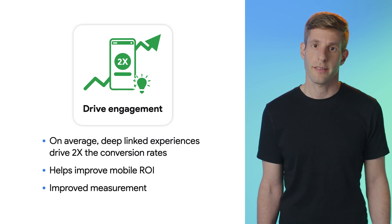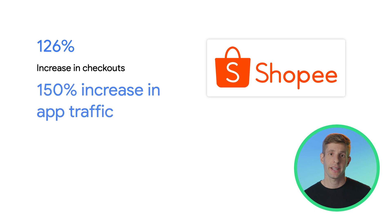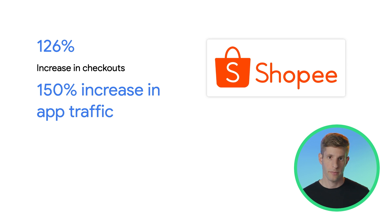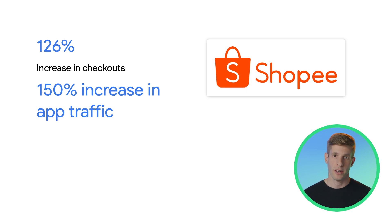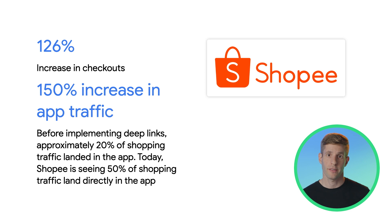Now let's talk about some companies that started using deep links and the tremendous effect it has had on their business. Shopee, the leading e-commerce platform in Southeast Asia and Taiwan, realized that their app traffic converted 20 times better than on the web and decided to prioritize ways to make it easy for customers to shop in-app. To deliver a frictionless experience across their mobile site and app, their marketing and product teams aligned on implementing deep links and saw amazing results. Before implementing deep links, approximately 20% of shopping traffic landed in the app. Today, Shopee is seeing 50% of shopping traffic land directly in the app, which represents a staggering 126% increase in checkouts.